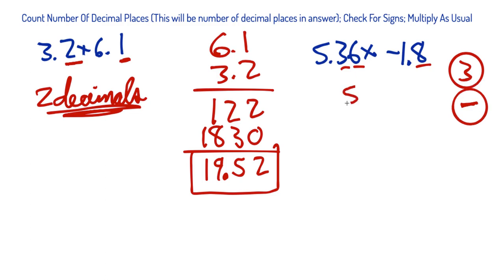Then we're going to multiply as usual. 5.36, 1.8. Act like we're not even multiplying by a negative number. Eight times six, 48. Carry that four. Eight times three, 24 plus four, 28. Carry that two. Eight times five, 40 plus the two, 42.